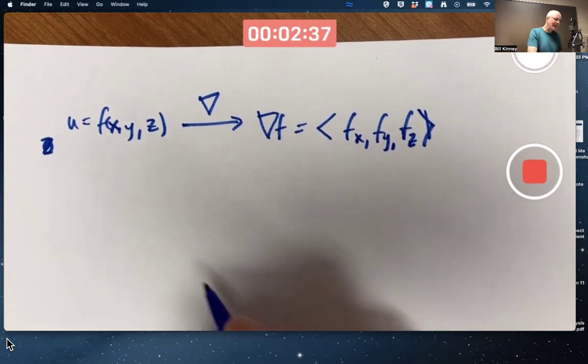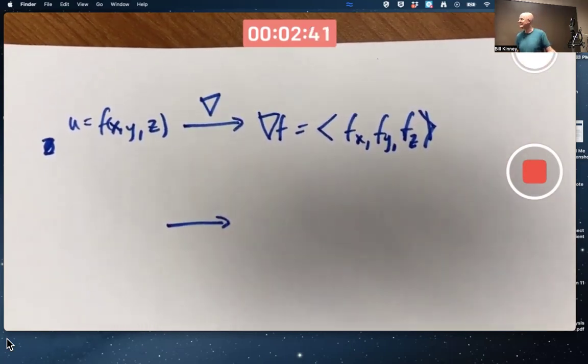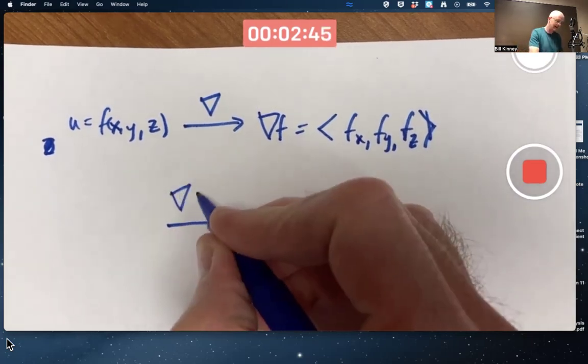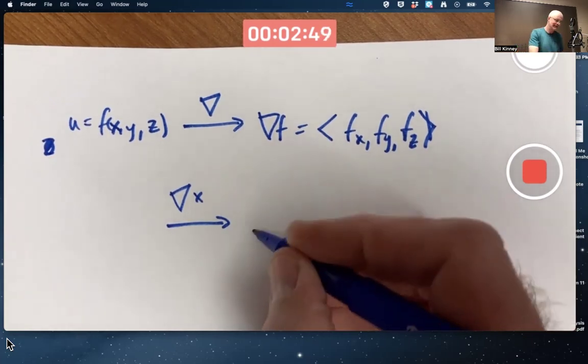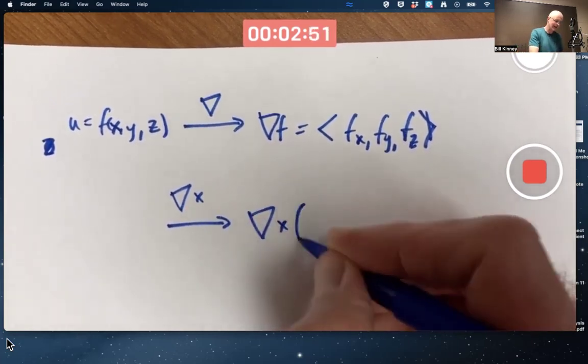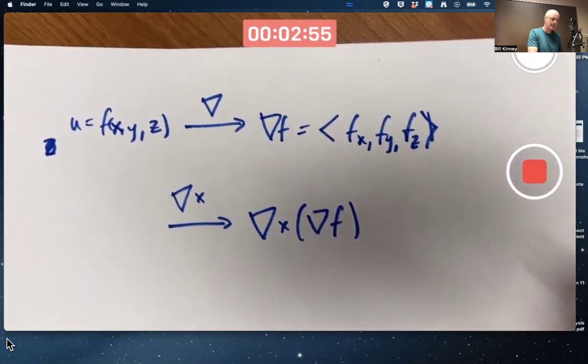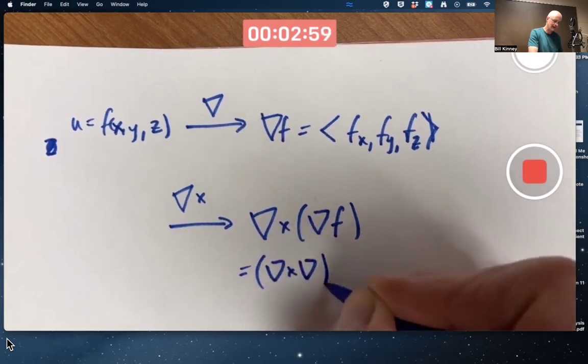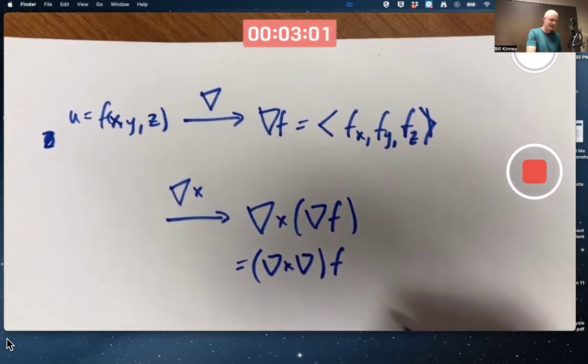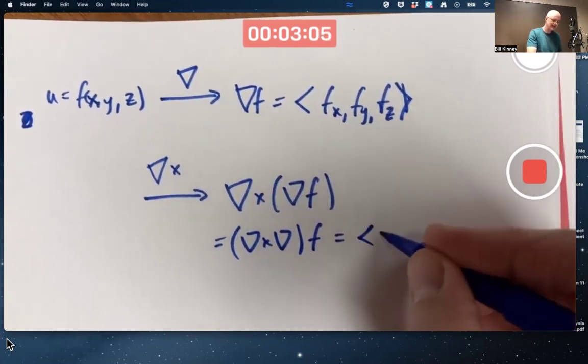But then if you take that vector, that gradient vector, and calculate its curl, apply the del cross operator to that vector, you could write it like this, or maybe you could write it like this for short, you will get guaranteed the zero vector.